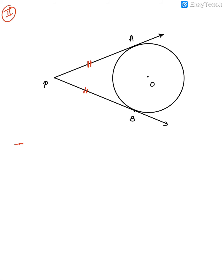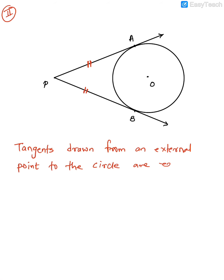The statement to write: tangents drawn from an external point to the circle are equal. As I always tell you, write down these properties and draw the figure simultaneously in your notebook so it will be easy to remember. Before you start any problem, make sure you know all the statements. Learn them, write them five times. Whatever is marked in red is the result.